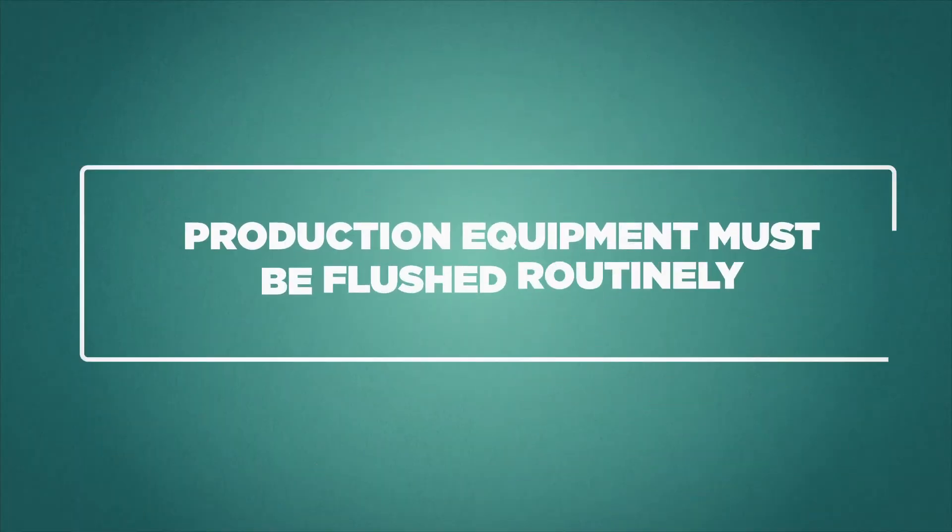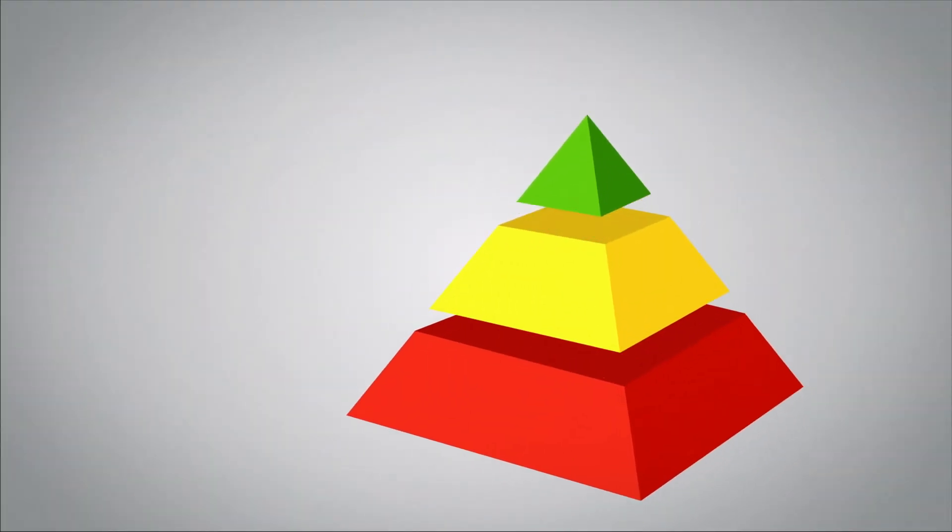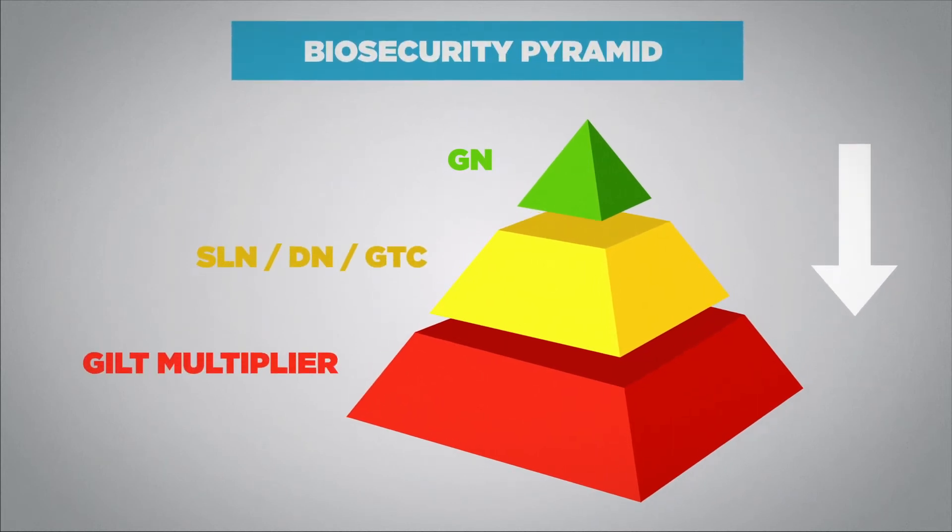Production equipment must be flushed routinely, especially before pig feed is produced after making feed for other species. Feed should be sequenced by species and follow a biosecurity pyramid.